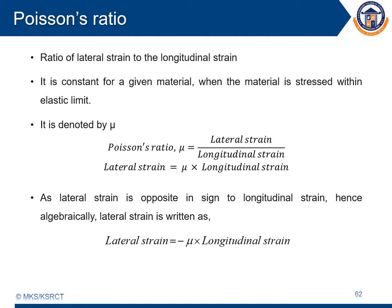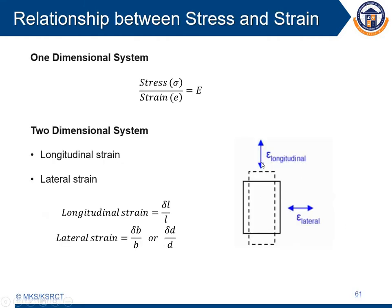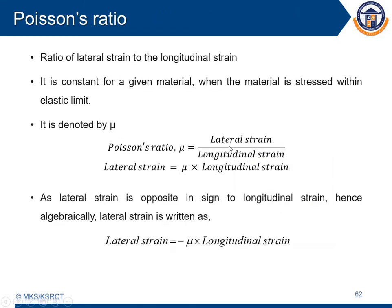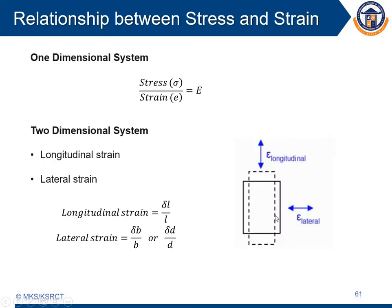The next important topic is the sign convention. Whenever there is an increase in dimension in one direction, we can also experience a decrease in dimension in the counter direction. The decrease will always be denoted with a minus sign; whenever we experience an increment, that will be denoted as positive. Wherever we experience a decline — a decrease in diameter or decrease in volume — we use the minus sign. Therefore, the lateral strain will always be negative: minus mu into longitudinal strain. If we can calculate the longitudinal strain, it is easy to calculate the lateral strain using the formula minus mu into longitudinal strain.